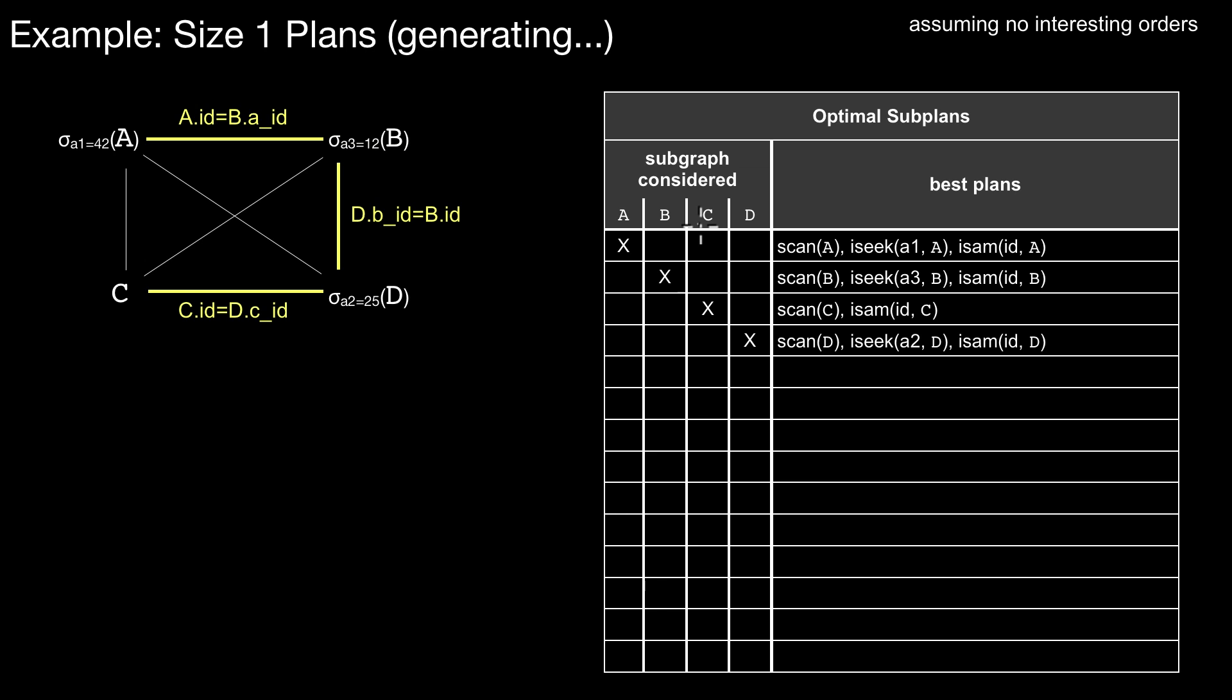This table keeps the current state of dynamic programming, and you already see the space requirements are 2 to the power of n, because 2 to the power of n is the size of all possible subsets of a set of size n. So this is actually the space complexity of dynamic programming. We keep this table for four relations. I here always mark with an x the relation that takes part in this entry. An x here means I list here as best plans that I consider to access relation A.